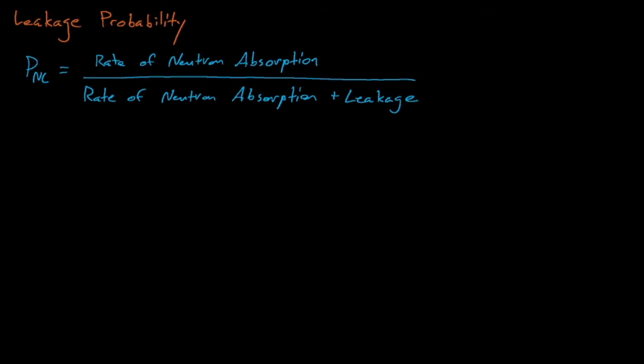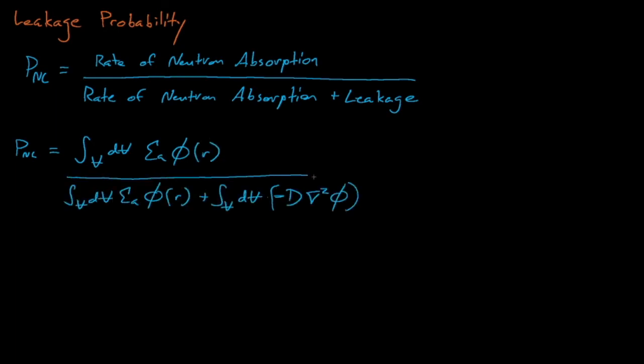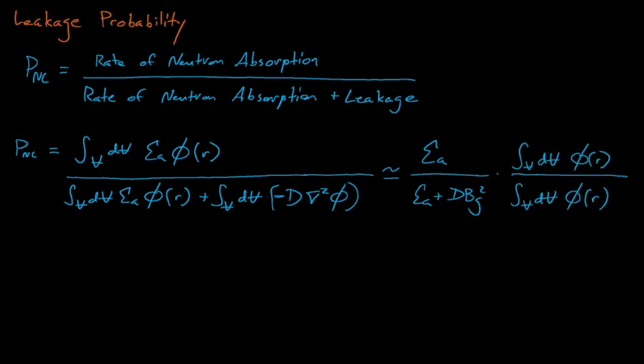The neutron absorption rate equals sigma absorption times phi integrated over the volume of the system, and the rate of neutron leakage is described by the negative d grad squared phi term, which also equals d times the geometric buckling times phi. Thus, after we cancel out some terms and rearrange things, we see that the non-leakage probability for neutrons in the system is approximately equal to 1 divided by 1 plus the diffusion length squared times the geometric buckling.